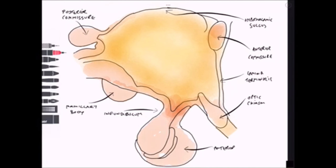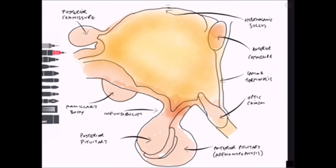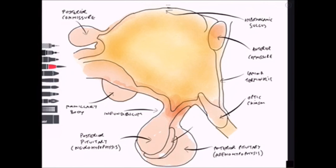The pituitary gland can be simplified as comprising three parts. The anterior pituitary is responsible for the production of six hormones under control from hypothalamic nuclei. The posterior pituitary stores a couple of hormones which are produced by hypothalamic nuclei. The final part, important for melanocyte-stimulating hormone production and not often talked about, is the pars intermedia.